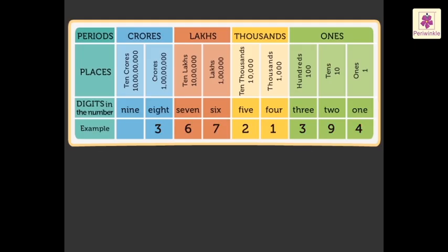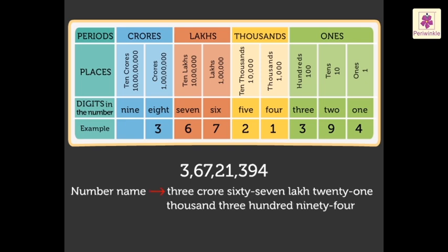Look at the given 8-digit number: 3, 6, 7, 2, 1, 3, 9, 4. We write it as 3,67,21,394.